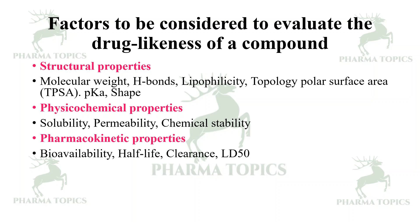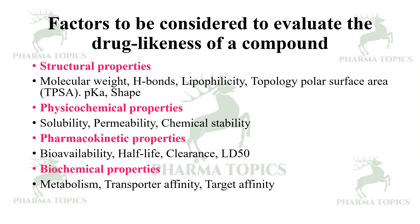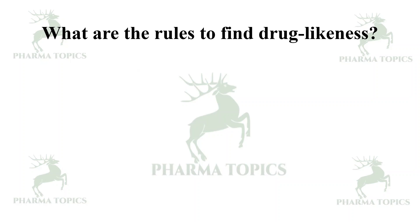Pharmacokinetic properties include bioavailability, half-life, clearance, and lethal dose 50 (LD50). Biochemical properties include metabolism, transporter affinity, and target affinity — all of which contribute to the overall assessment of drug likeness.